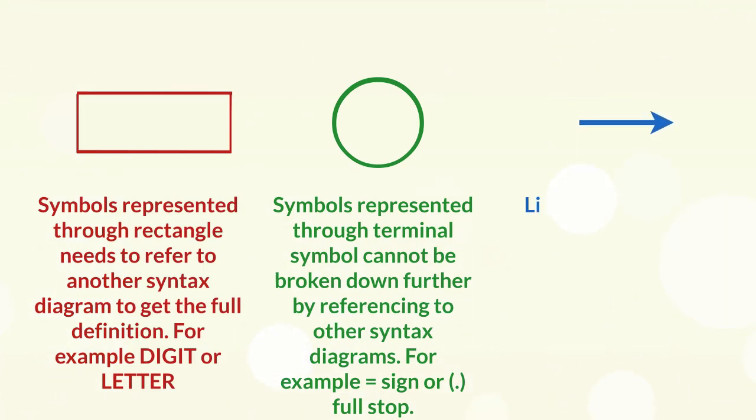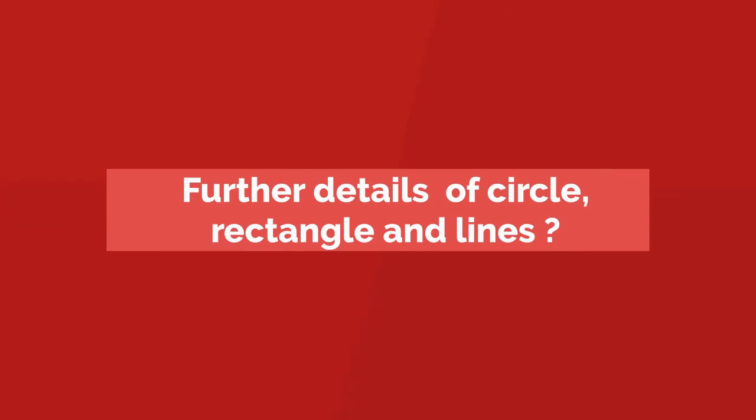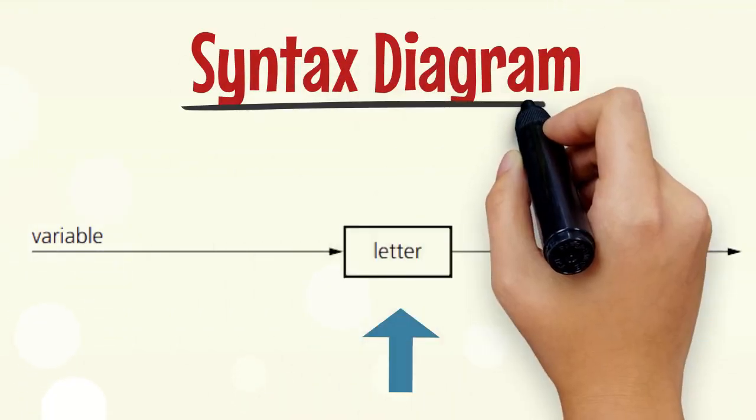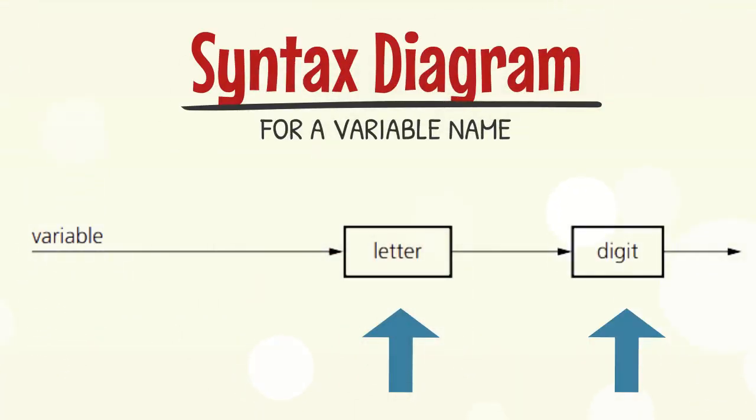Finally, line and arrow shows the direction of symbols in a syntax. Let's try to understand a syntax diagram to define the name of a variable. Letter and digit need to be further defined in other syntax diagrams.